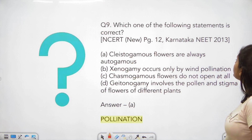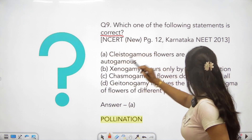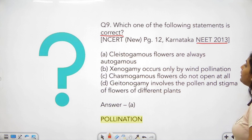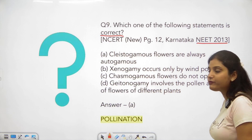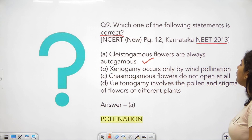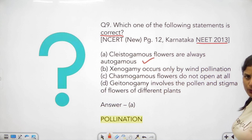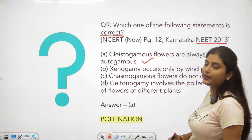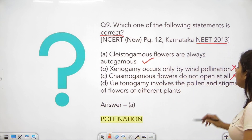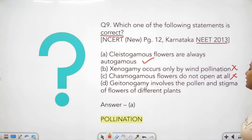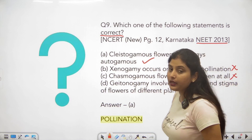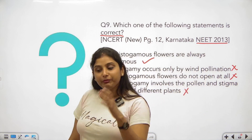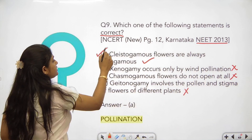Question number 9: which one of the following statements is correct? Asked in NEET 2013. Cleistogamy flowers are always autogamous — obviously correct, since they are closed and self-pollinate. Xenogamy occurs only by wind pollination — why? Insects or water can also achieve xenogamy, so this is wrong. Chasmogamy flowers do not open — incorrect, chasmogamy flowers do open. Geitonogamy involves the pollination of flowers of different plants — no, in geitonogamy it is the same plant with two different flowers. So the answer is A.